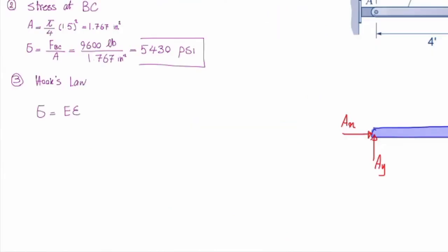So Hooke's law says that stress is equal to E times strain. The modulus of elasticity is given. It is 29,000 ksi. I'm looking for strain, and I know how much is stress. So strain would be sigma divided by E.